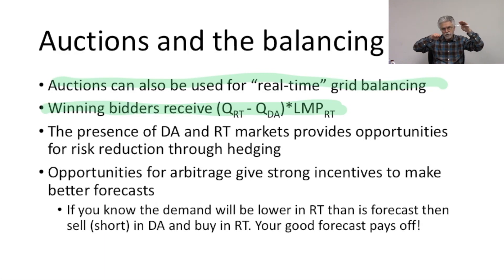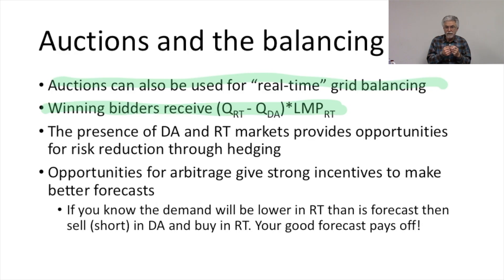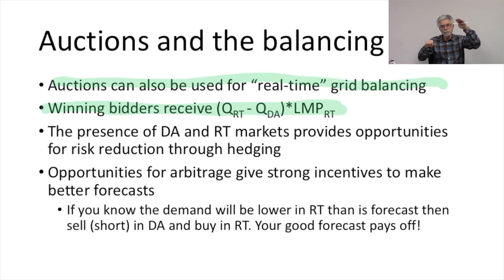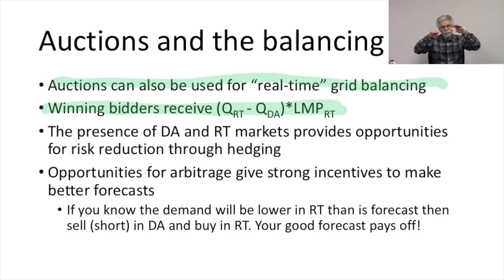This hedging incentive that firms have first gives everyone a really good incentive to try to have a good forecast of tomorrow's electricity demand relative to today's, but also gives people incentive to trade on the basis of that information, which would tend to bring the prices of today's and tomorrow's markets closer together based on the incentive to have the best available forecast for tomorrow's demand.